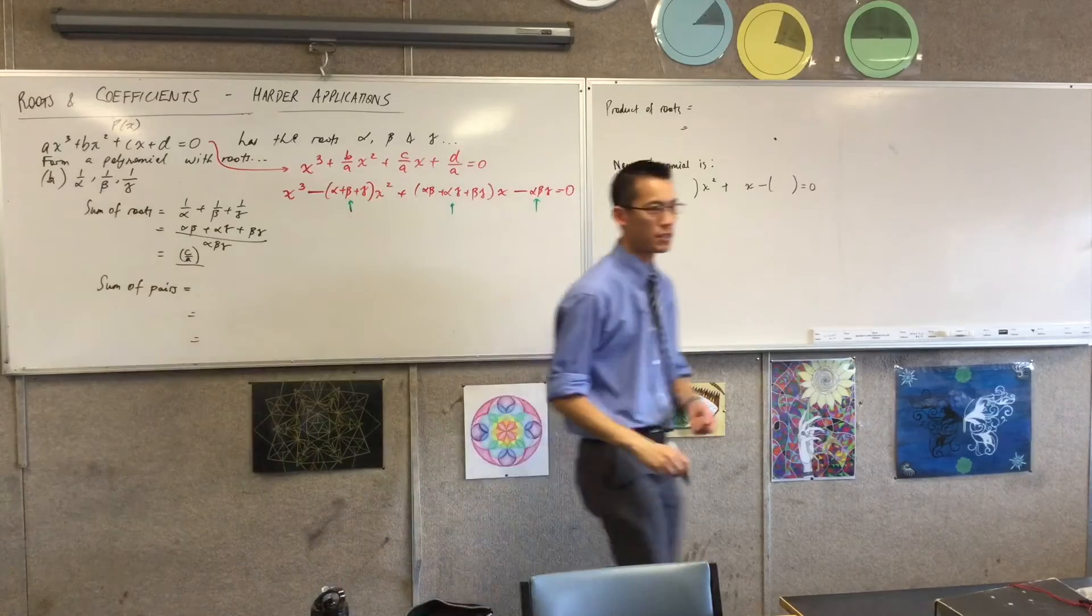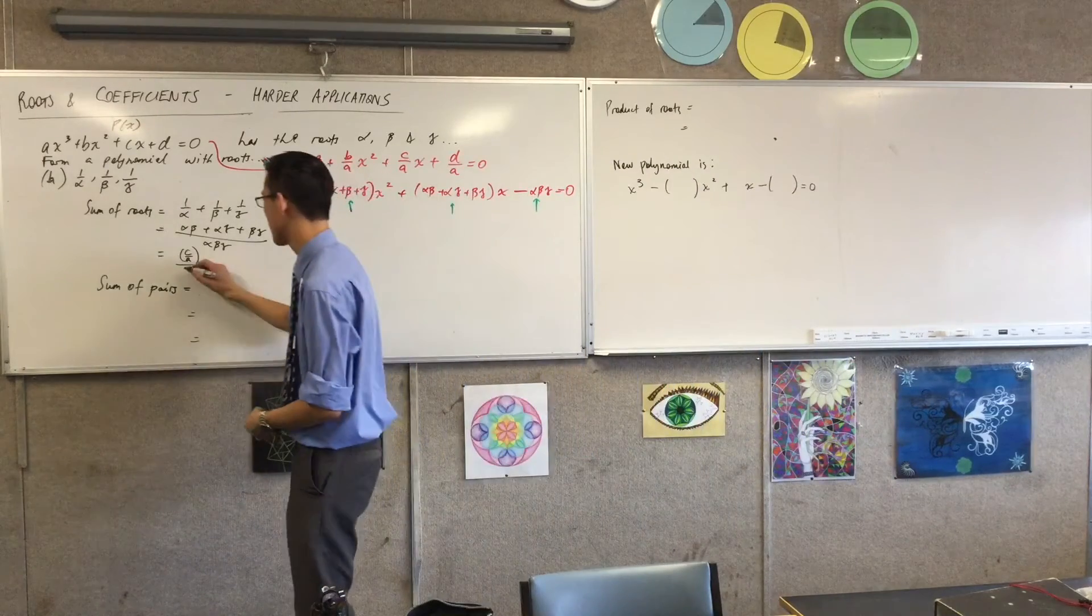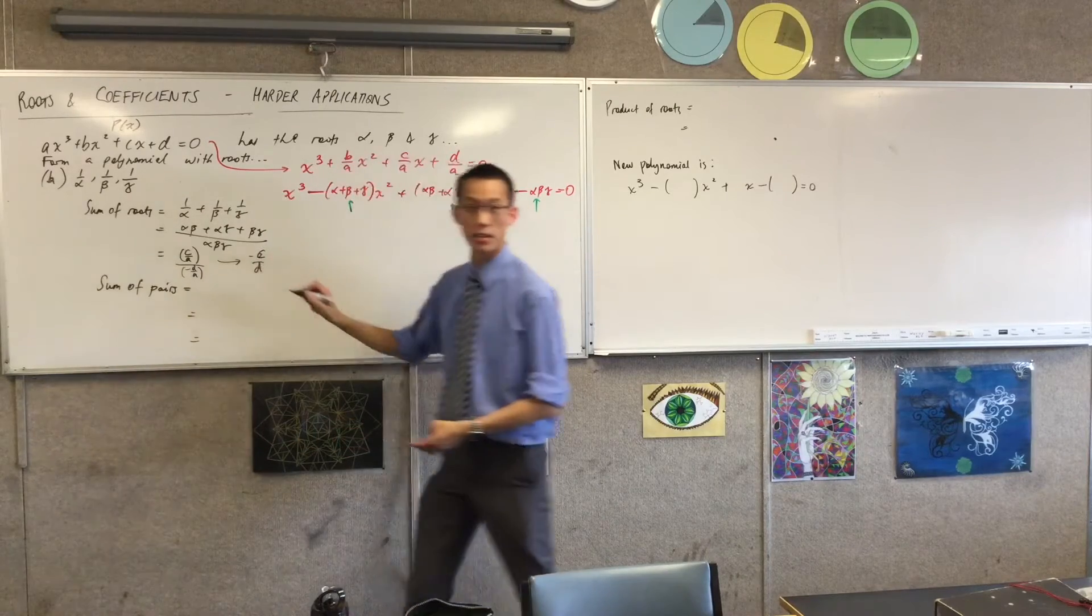And what you're dividing by is minus D on A. So you've got that on A that's canceling. So this, in fact, is actually minus C on D.